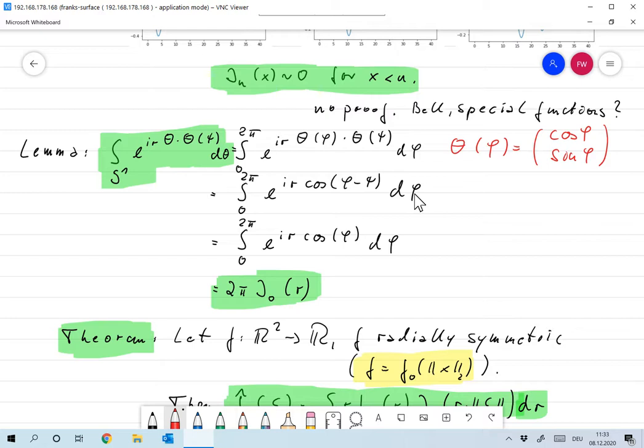Now we let phi minus psi, we substitute phi minus psi by phi, and this is nothing but integral 0 to 2 pi e to the IR cosine phi d phi. And according to what we proved, this is nothing but the integral representation of the Bessel function, and so that's 2 pi times j0 of R.